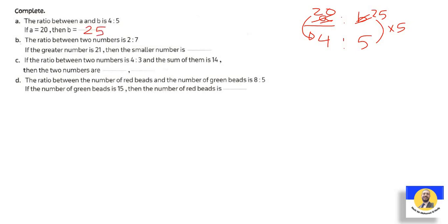The ratio between two numbers is 2 to 7, and the greater number is 21. Write 21 under the greater number. 7 is greater than 2. So the smaller equals what? How does 7 become 21? By 3. Or 21 divided by 7 equals 3. So here we multiply by 3: 2 by 3 equals 6. So 6 to 21 is the same as 2 to 7.